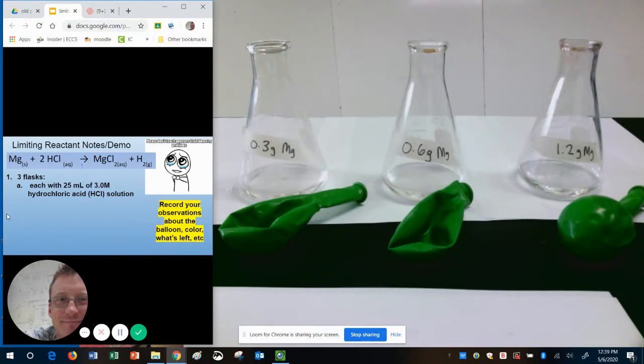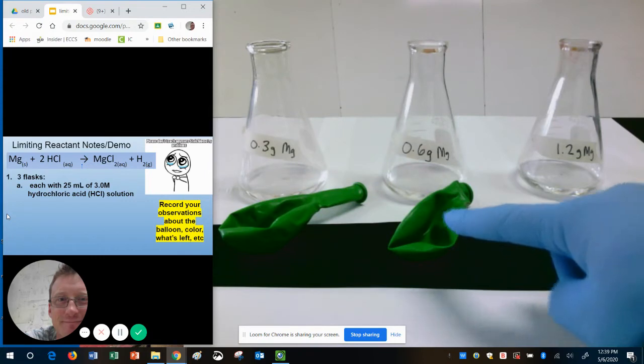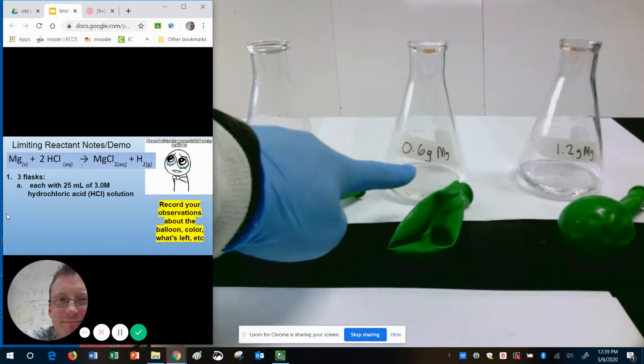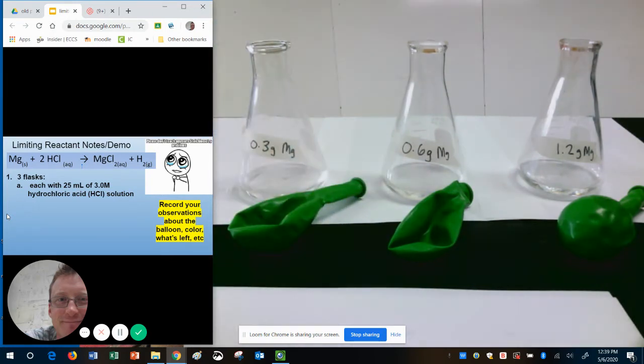In each of these balloons, we have magnesium powder. And the amount of magnesium powder is given to us on the tape. So I have 0.3 grams in the first balloon, 0.6 in the middle one, and 1.2 grams of magnesium in the third.